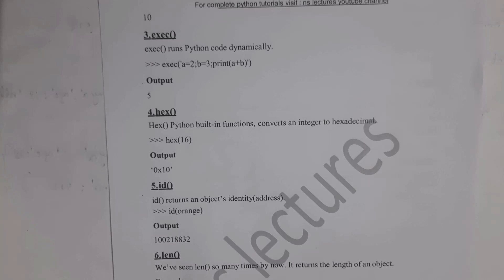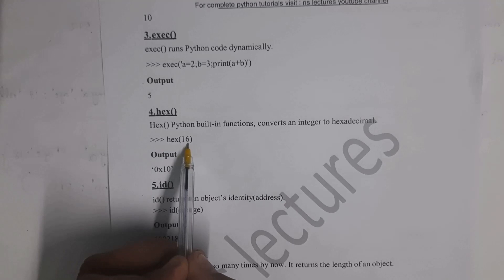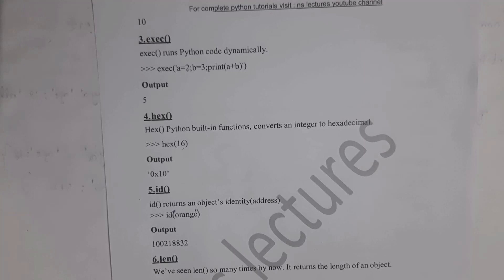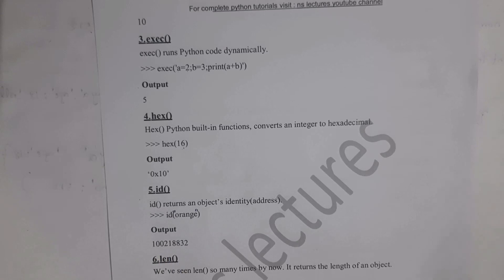Next is the hex function, where hex stands for hexadecimal. Using this function you can convert an integer to hexadecimal. For example, hex(16) converts 16 to hexadecimal, giving output 0x10. Next is the id function, used to identify the memory address. For example, id('orange') will display the address of 'orange', such as 100218832.